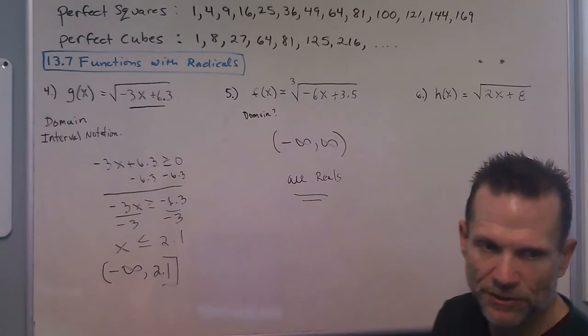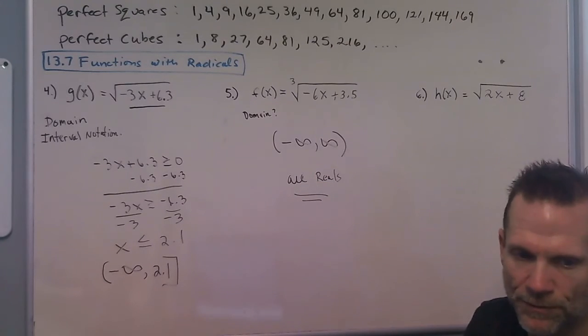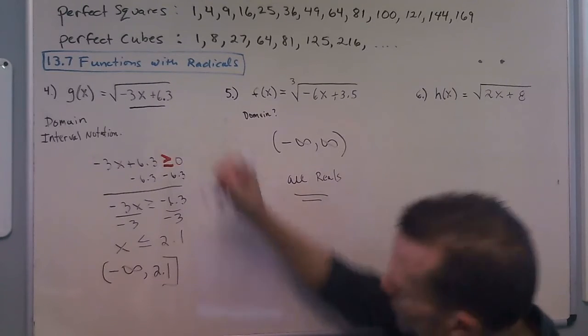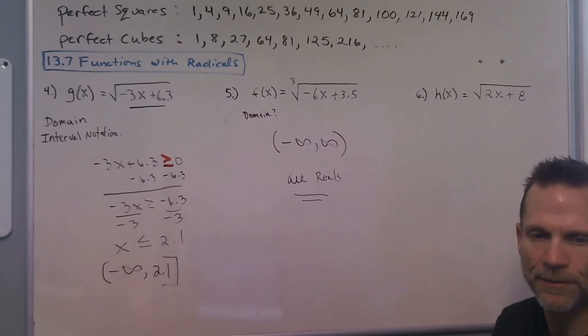So for even roots, like the second, fourth, sixth root, we've got to use this idea where we set it greater than or equal to zero. But for odd roots, we can just remember it's negative infinity to infinity.